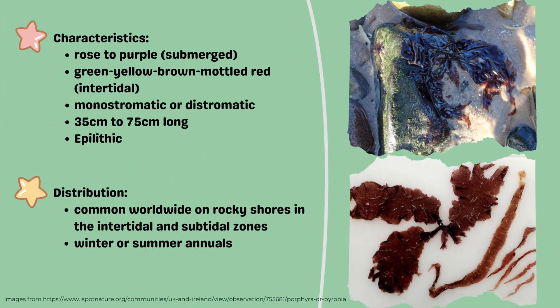Porphyra species are usually epilithic, attached by means of numerous thin colorless rhizoidal cells, and it appears on rocky shorelines worldwide. Few species can be found in the tropics and the poles, but its greatest diversity is found in cold-temperate and boreal regions.